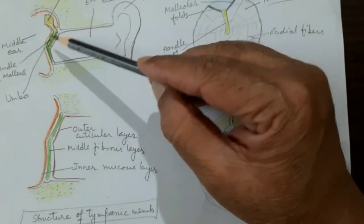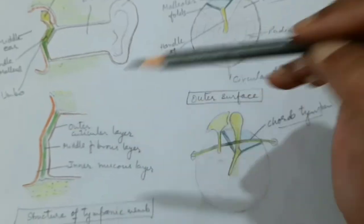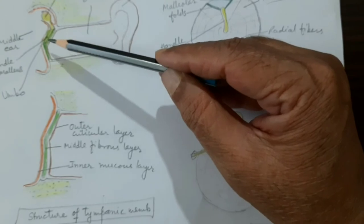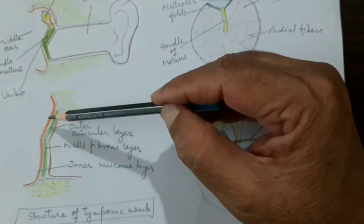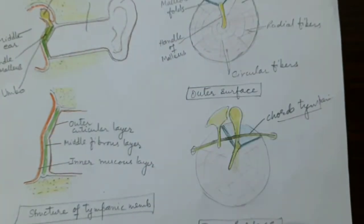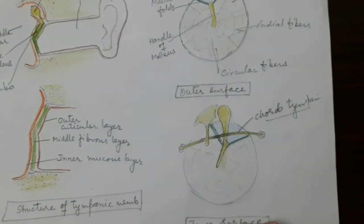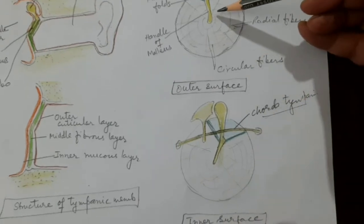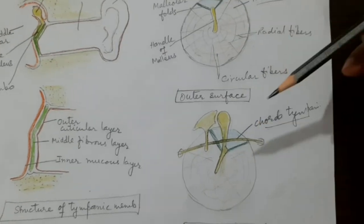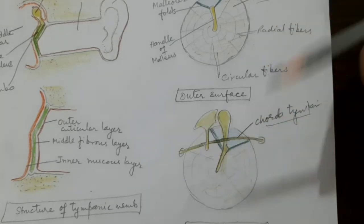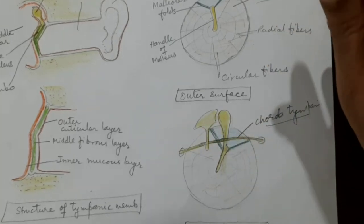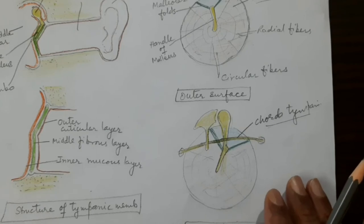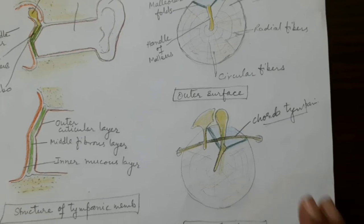Now you know the location, the two surfaces — concave and convex — and the three different layers: cuticle, fibrous, and mucous membranous layer. The tympanic membrane has an extensive blood supply. Looking at the diagram from the dissector — volume three, authored by me — you can see the tympanic membrane here with the handle of the malleus, tensor tympani muscle attached to the process of the malleus, head of the malleus, and the incus and stapes.